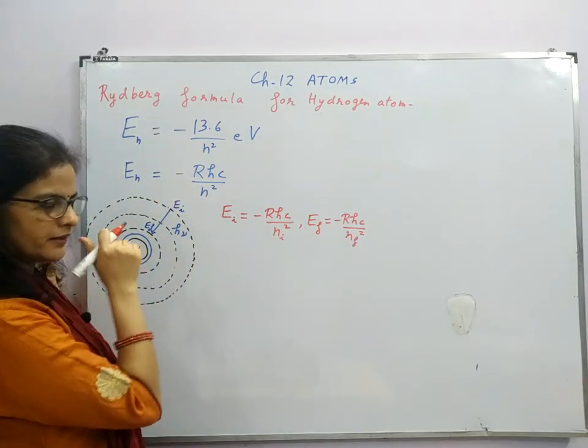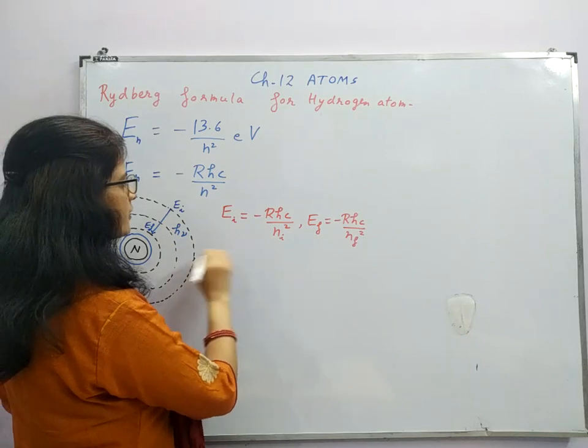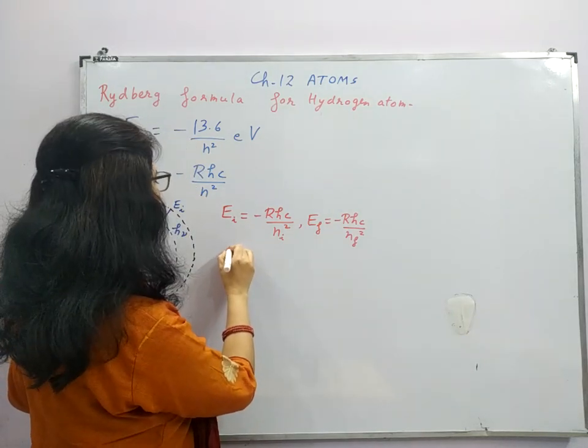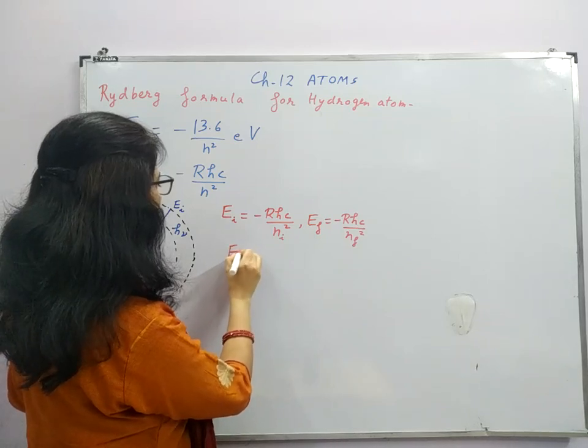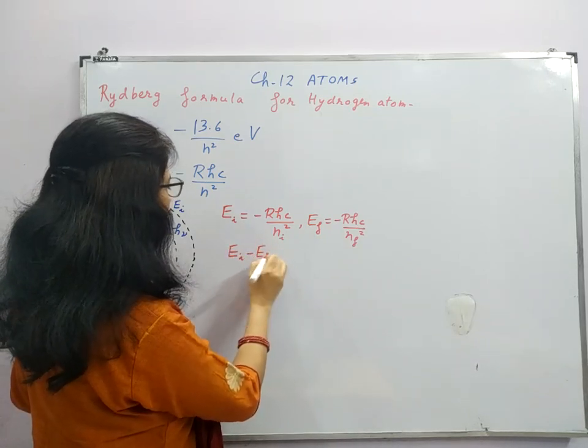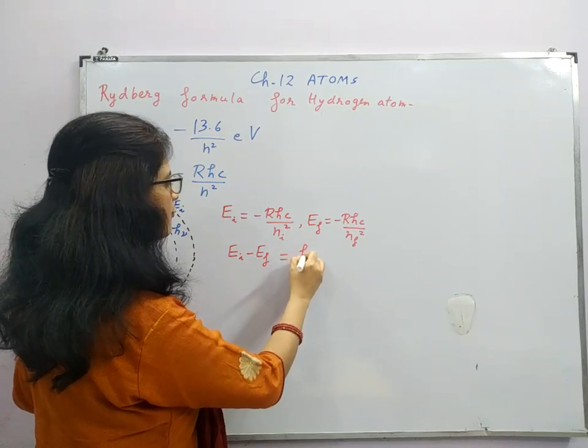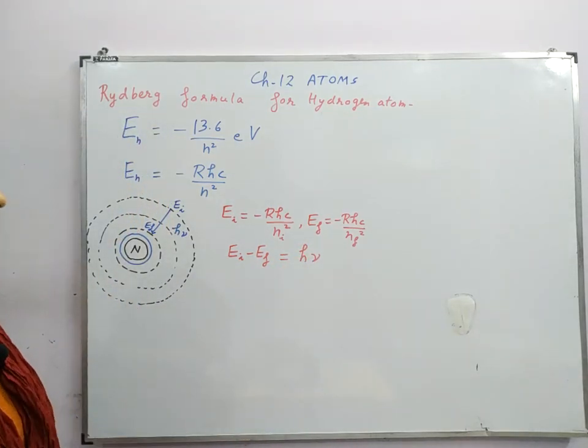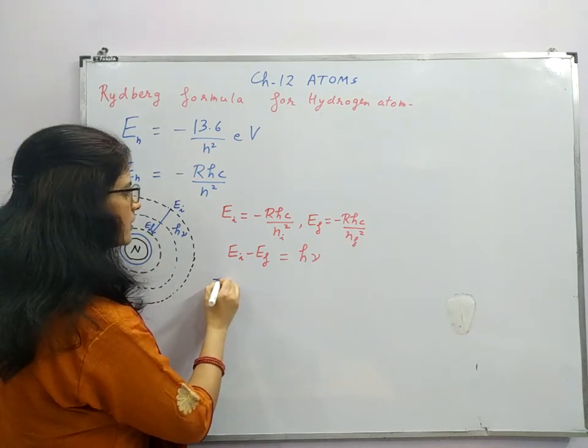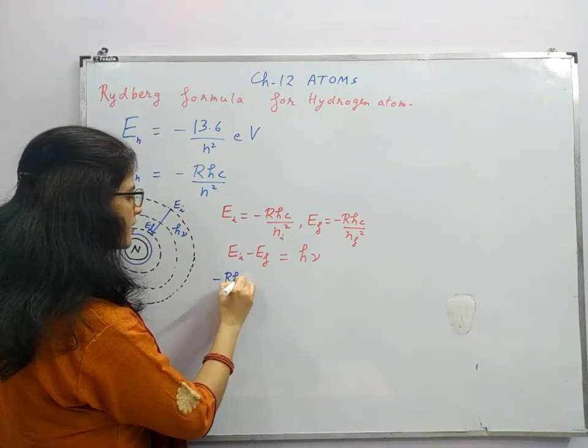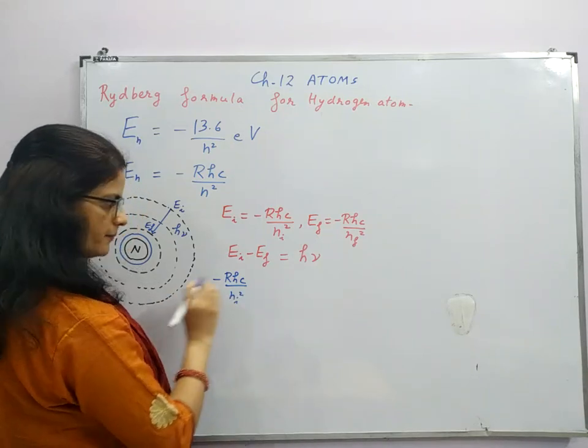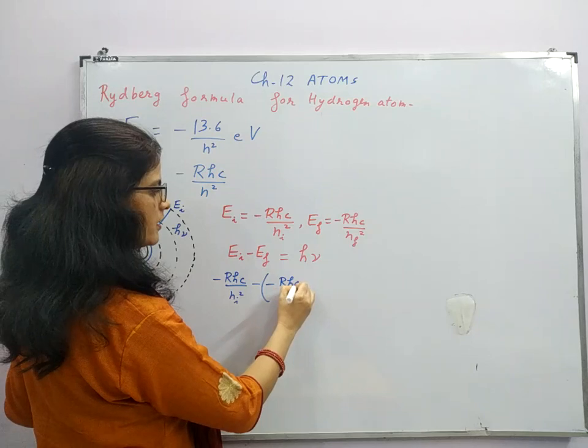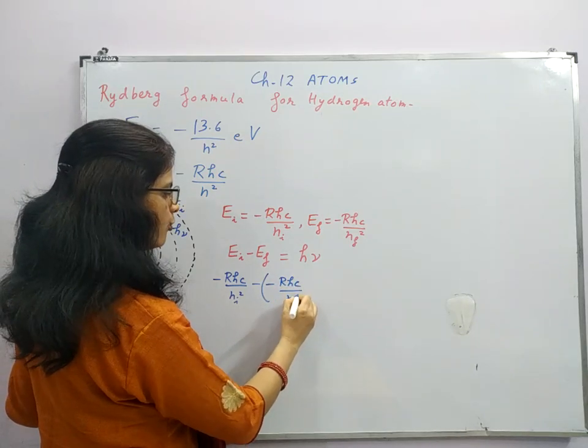So if we want to find the difference, this difference will be E_i minus E_f, which will be released in the form of photon. If we put these values, this will be minus R_h c upon n_i whole square minus minus R_h c upon n_f whole square.